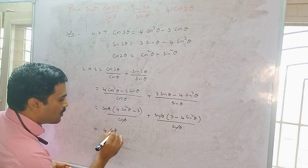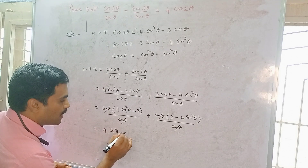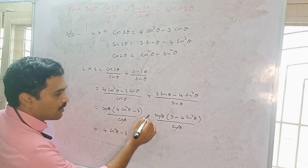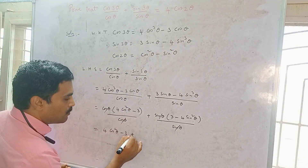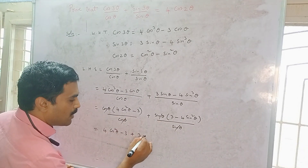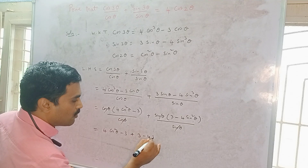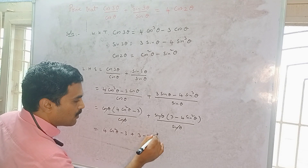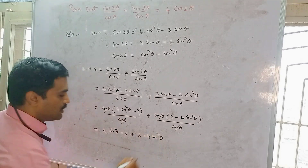After cancellation, there is no denominator remaining. We are left with: 4cos²θ − 3 + 3 − 4sin²θ.